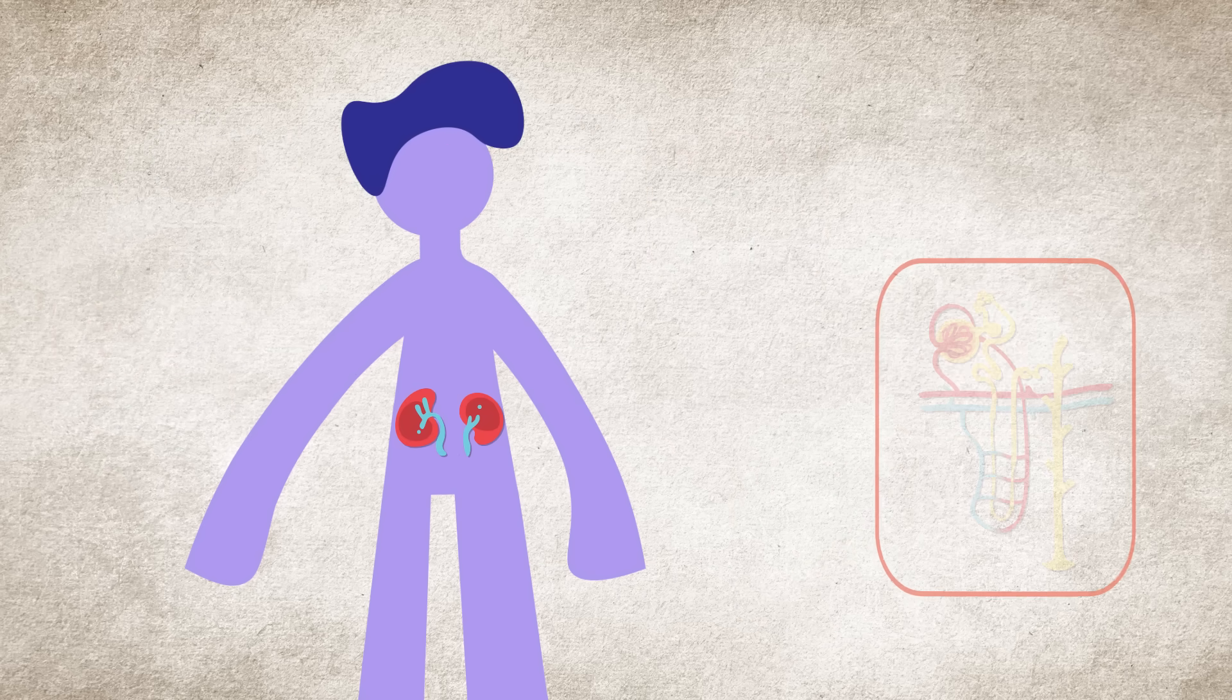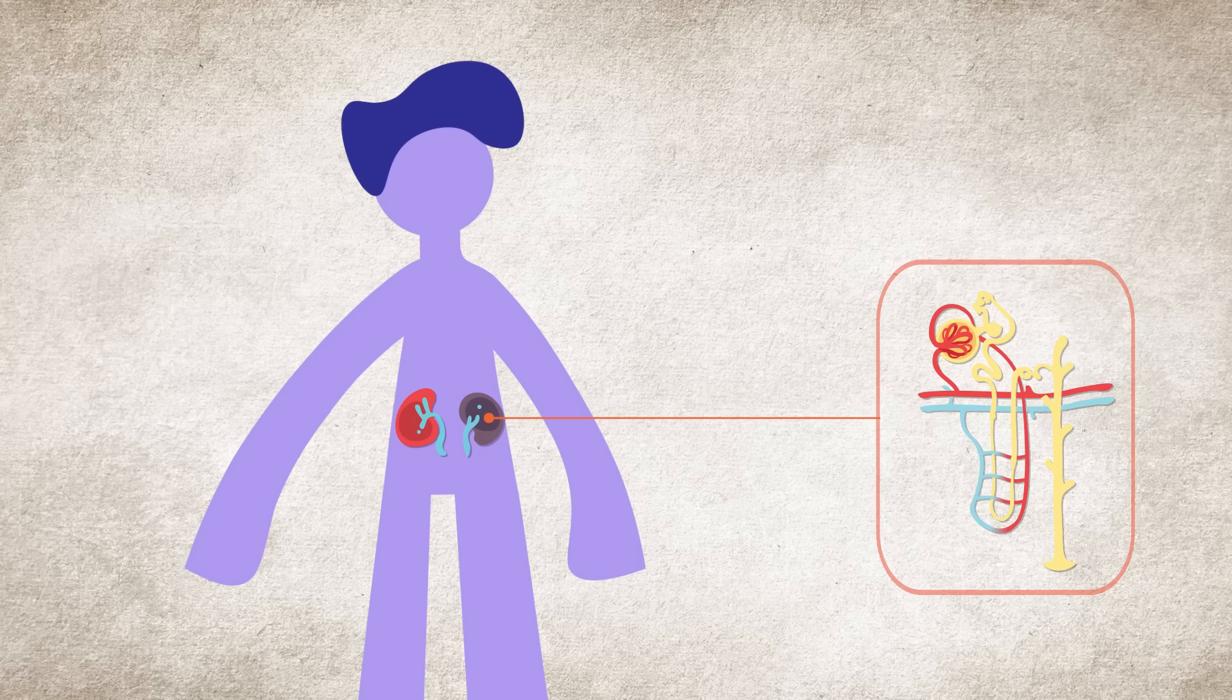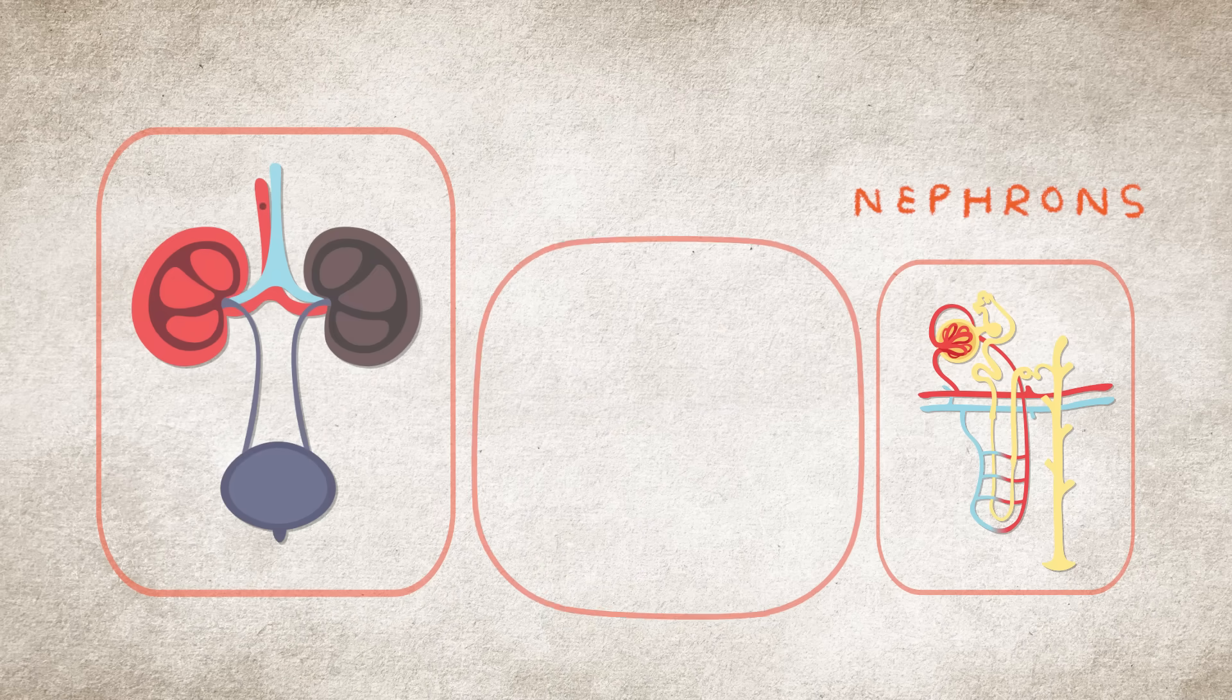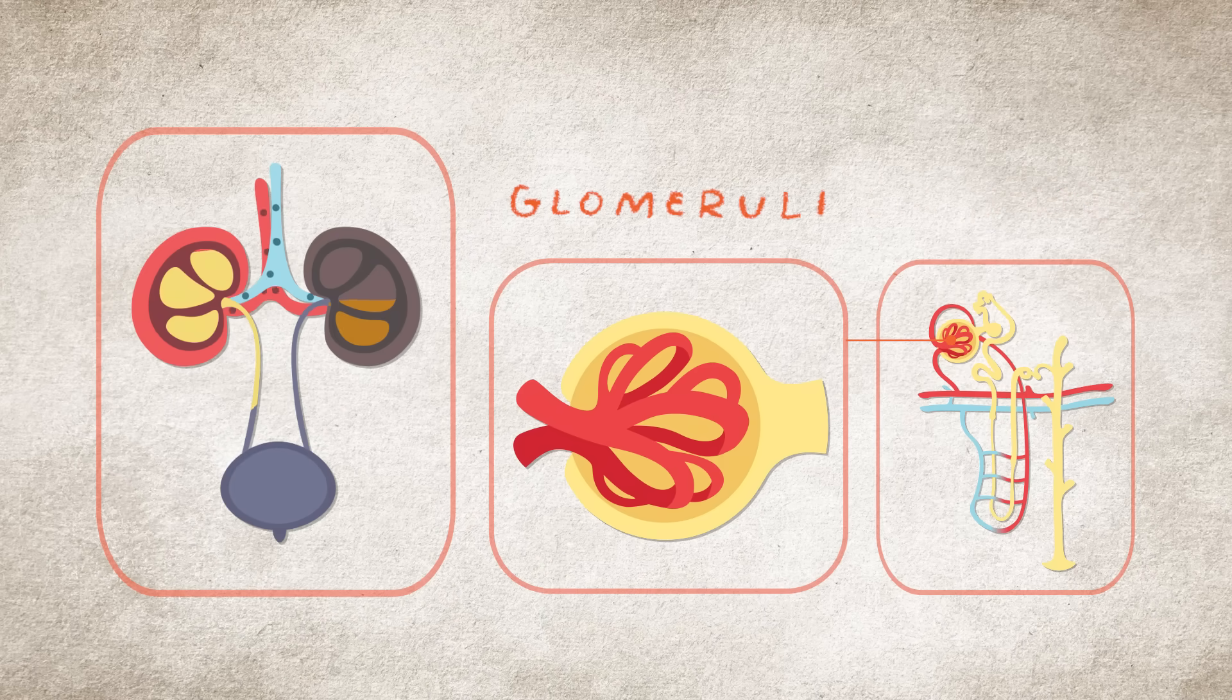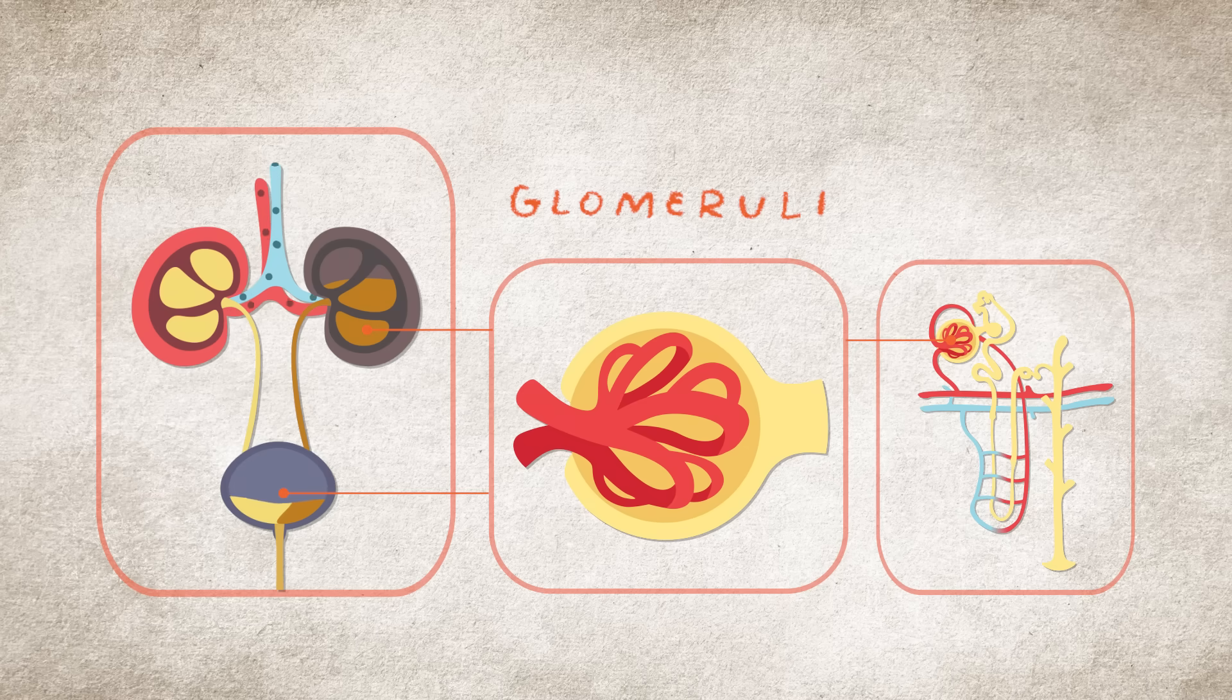When the immune system attacks the kidney's nephrons, it's called lupus nephritis. Nephrons are filters with tiny blood vessels called glomeruli that remove waste and excess water from the blood in the form of urine.